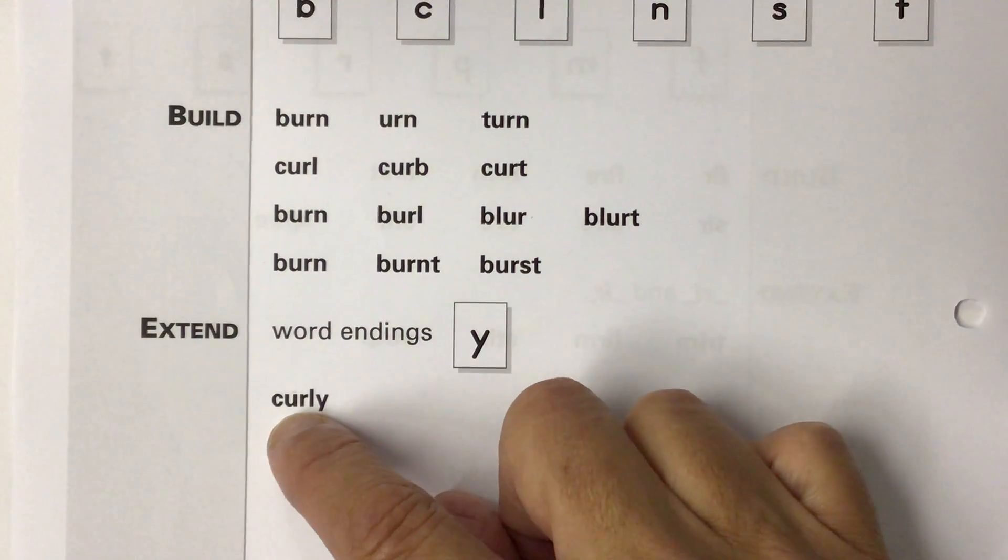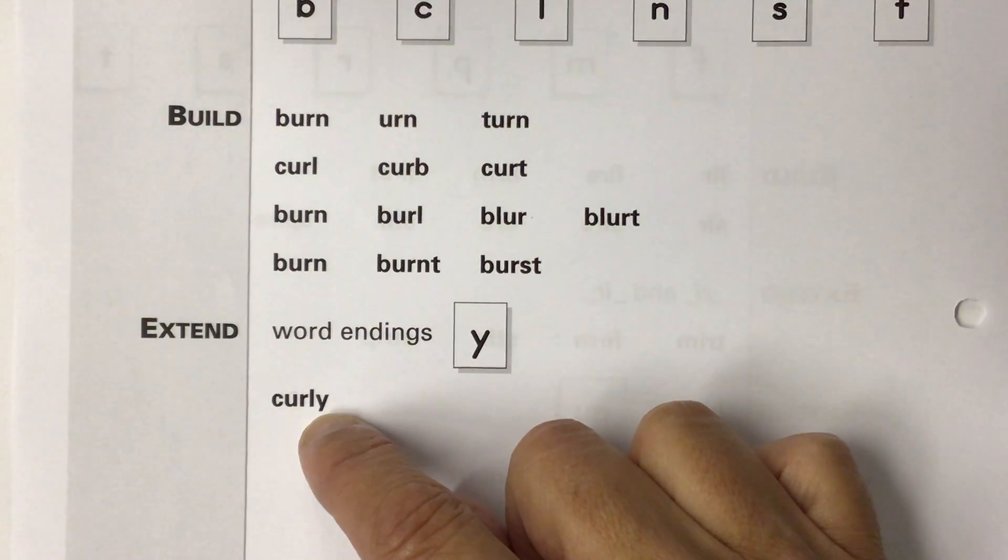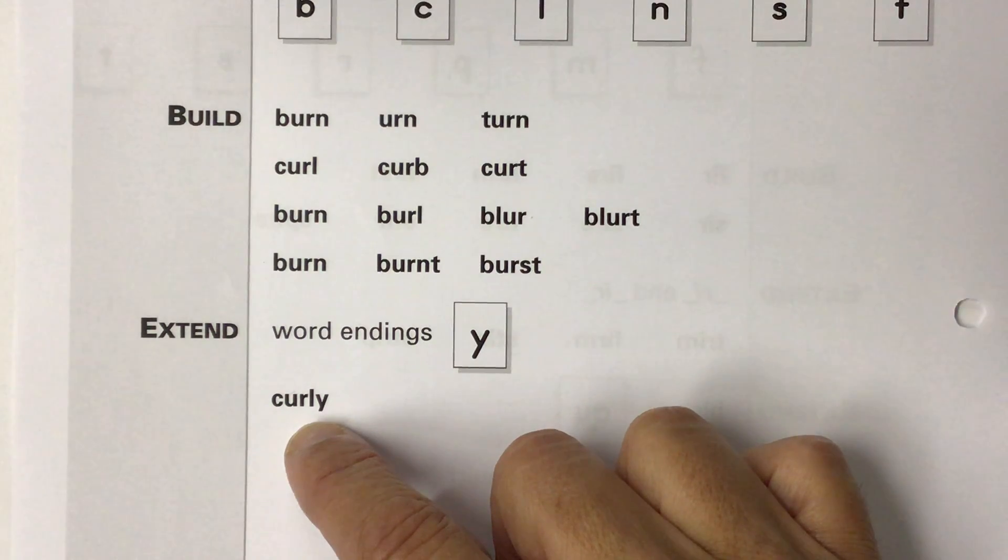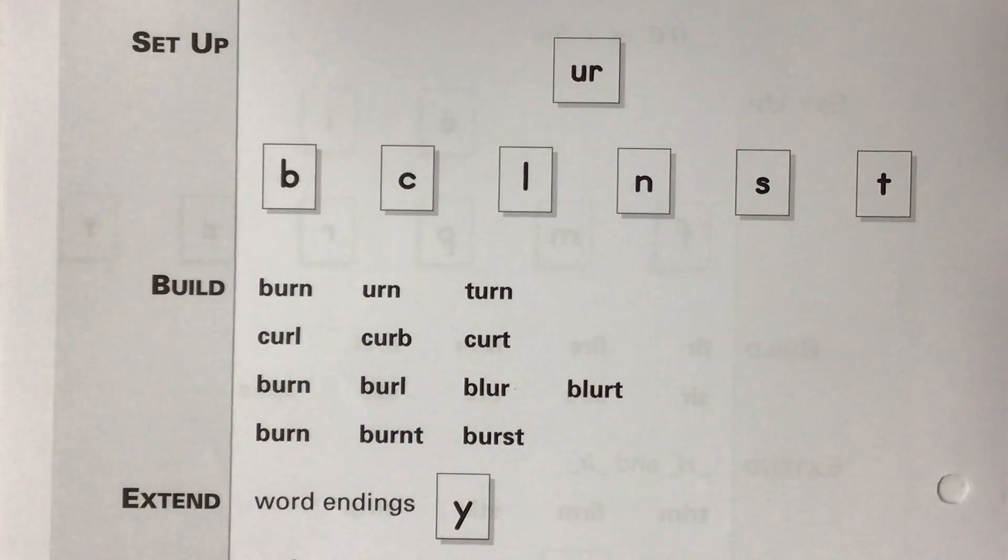Here's the word curl. Notice the U-R says ur. And the Y says the long E sound at the end of the word. Curly. Curly. Now you say it. All right. Go ahead and build and touch and say and then write these words.